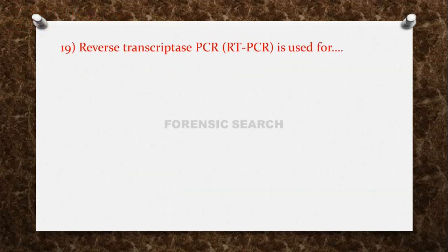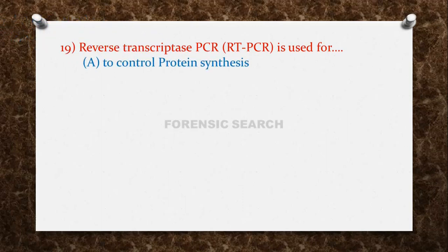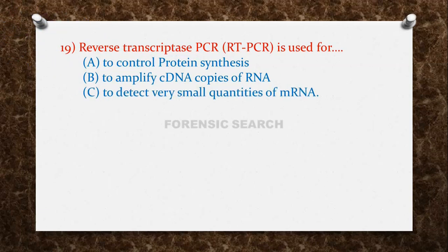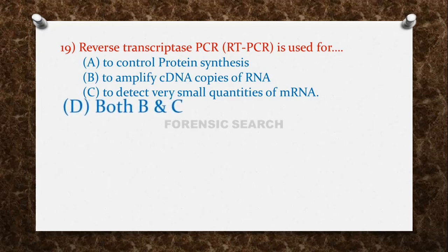The next question: Reverse Transcriptase PCR (RT-PCR) is used for — Option A: to control protein synthesis. Option B: to amplify cDNA copies of RNA. Option C: to detect very small quantities of mRNA. Option D: both B and C. The correct answer is option D — both B and C.